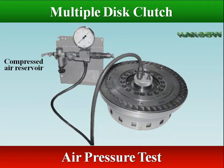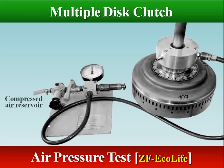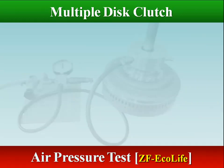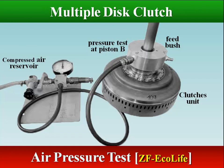An air pressure test can be used to verify operation of clutch packs. They make an audible thud when engaged and should release smoothly when air pressure is released. Set the pressure of the compressed air reservoir to 3 bar and close the stop cock; pressure drops are not permissible. Repeat the pressure test at piston B just as done for piston A. If the pressure loss in the piston becomes too large, the corresponding piston must be removed and the cause of the leakage must be remedied.